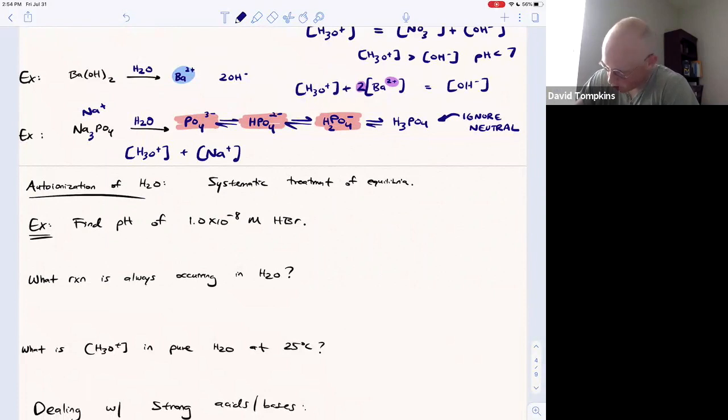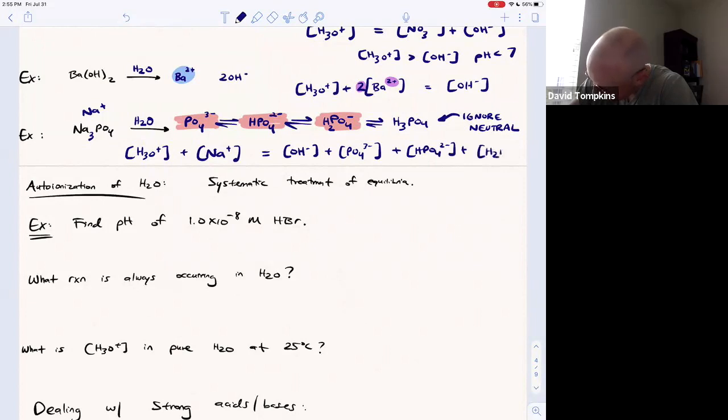And the addition of those two cations, each with one positive charge, will equal the sum of all of the anion concentrations. Phosphate plus monohydrogen phosphate plus dihydrogen phosphate. One more thing. Notice that there are two charges here.